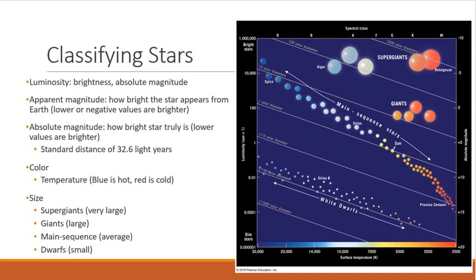We also classify based on color. So this is a proxy for temperature. So the blue stars are hotter, red are colder. So we see that on this graph, that we go from the hot stars to the cooler stars. And we also talk about size. So we have supergiants, which are very large. And then we have giants, which are large. We have the main sequence, which are the average stars. The sun is one of those. And these will progress through a sequence, which is why they're called the main sequence. And then we have dwarfs, which are tiny stars. And they also progress through a sequence.